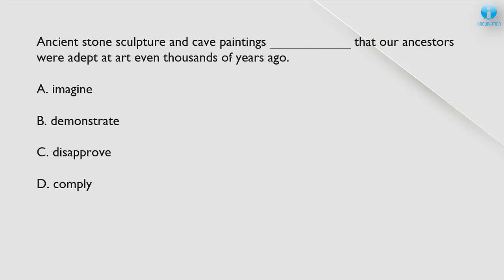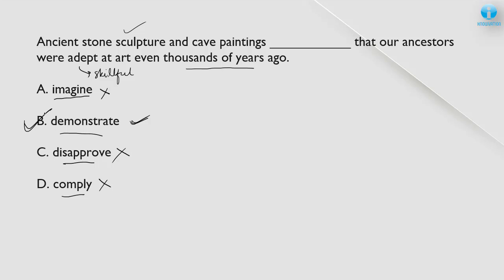Q13: 'The cellular jail Kalapani is a classic example of an infrastructure built to [dash] the spirit of human life. It is known to [dash] even the most hardened criminals.' Since it's a jail, this is a negative sentence. 'Uplift' — jails generally don't uplift. 'Ridicule' — no. 'Destroy and prevent' — 'prevent' doesn't make a complete logical sentence. 'Crush and dishearten' — crushing the spirit fits perfectly, and even hardened criminals are disheartened by this jail. The correct answer is C: crush and dishearten.